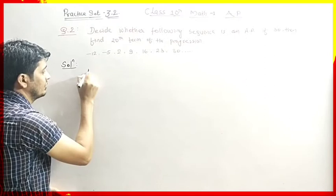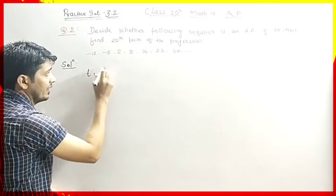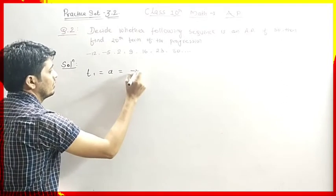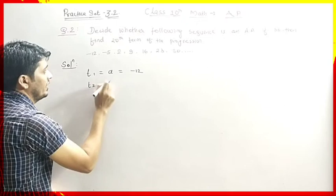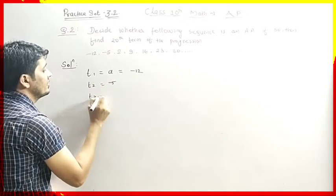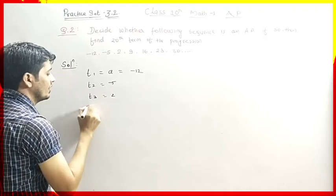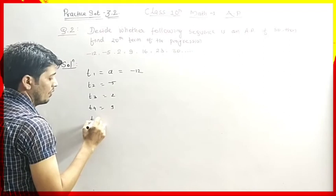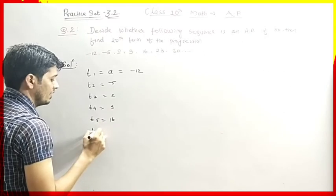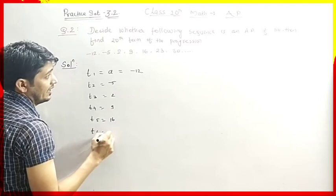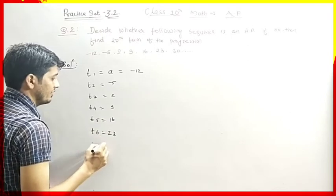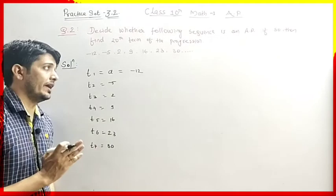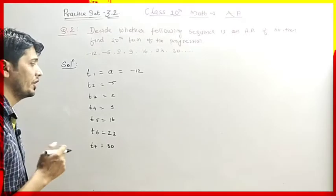The first term T1 equals A, and A equals minus 12. Then T2 is minus 5, T3 is 2, T4 is 9, T5 is 16, T6 is 23, and T7 is 30. So we have 7 terms, and we have to find the common difference for every consecutive pair.